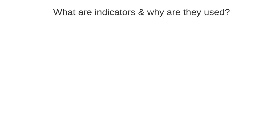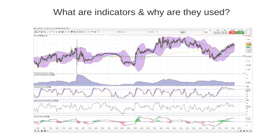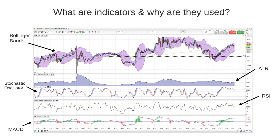Indicators are on-chart studies that are used to enhance a trader's analysis of the particular market they are looking at. They do this by displaying information about the movement of price in a different way from what you see on your chart. Each indicator tends to use a specific mathematical formula to look at the price from a different point of view. They can be used to help a trader ascertain information about a market, for example whether it is currently in an uptrend or a downtrend, and can also be used as entry and exit signals as part of a trader's strategy.